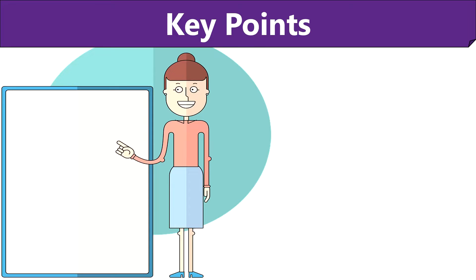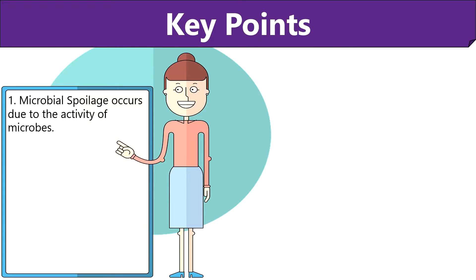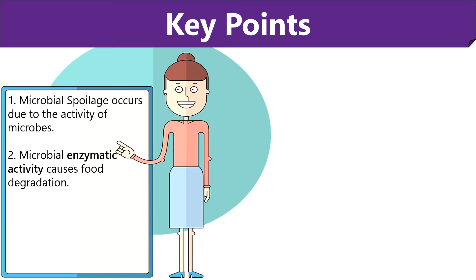Let us discuss some key points before proceeding to the theory of microbial food spoilage. Food spoilage can result through insect damage, physical injury, chemical changes and microbial attack. Microbial food spoilage is caused due to the growth and activity of the microorganisms. The enzymatic activity by the microorganisms is responsible for food degradation, like hydrolysis of proteins by proteolytic enzymes and rancidity by lipolytic microbes. Food serves as a growth medium for microorganisms as it contains proteins, carbohydrates and lipids that are utilized by the microorganisms.